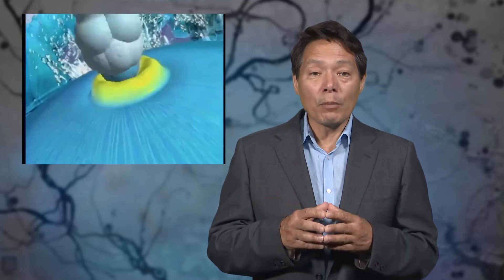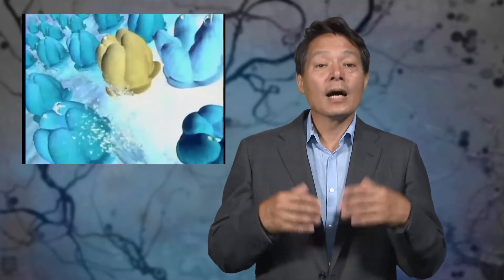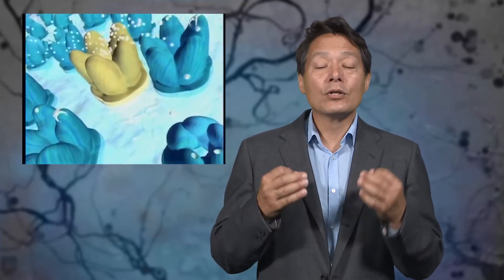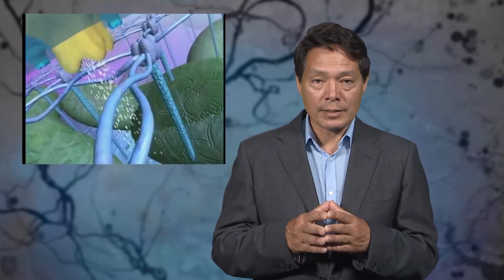When an ionotropic receptor opens, ions flow into and out of the postsynaptic neuron. If there is a net increase in charge inside the postsynaptic neuron, it is said to depolarize. Depolarization is typically associated with neural excitation. That means that the neuron becomes more likely to fire an action potential. Conversely, hyperpolarization is typically associated with neural inhibition. That means that a neuron becomes less likely to fire an action potential.